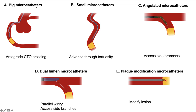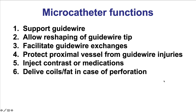The main uses by category: larger outer diameter microcatheters are most commonly used in antegrade CTO crossing. Smaller ones can be used for wiring through tortuosity or for retrograde crossing, especially through epicardial collaterals. Angulated microcatheters can be used for wiring through tortuosity or accessing side branches in bifurcation stenting. Dual-lumen ones can be used for parallel wiring in CTO PCI as well as accessing side branches in bifurcation stenting. Plaque modification microcatheters are most commonly used for balloon-uncrossable lesions where the wire goes through but the balloon will not.